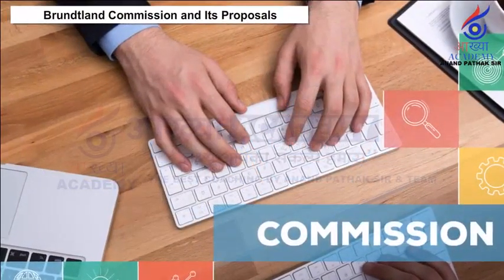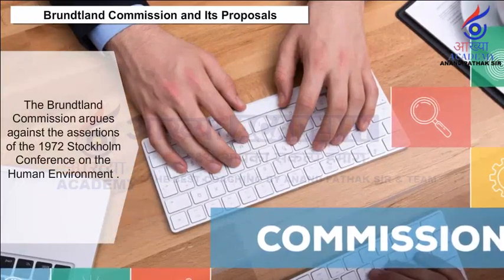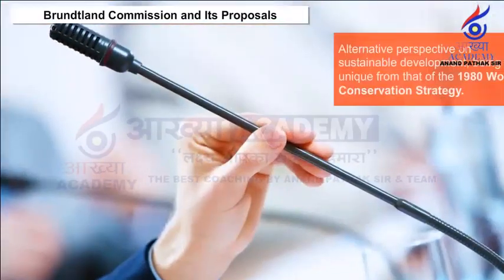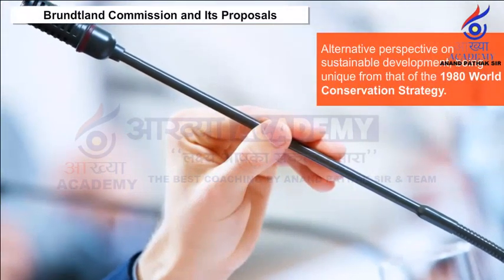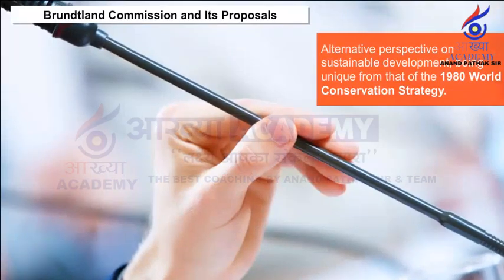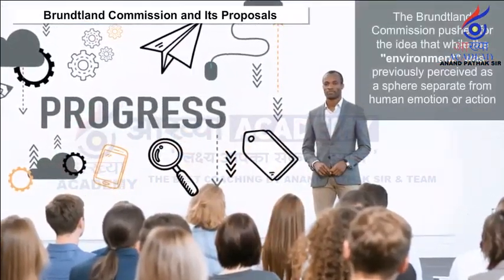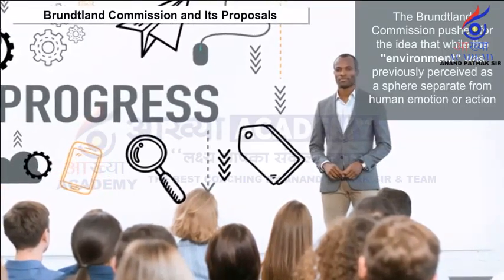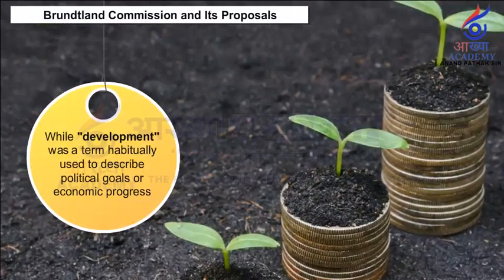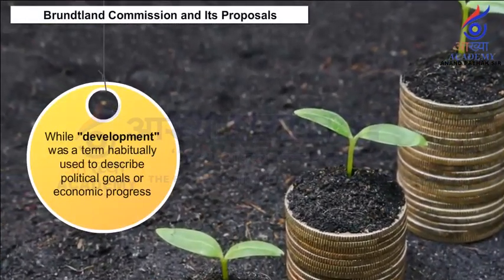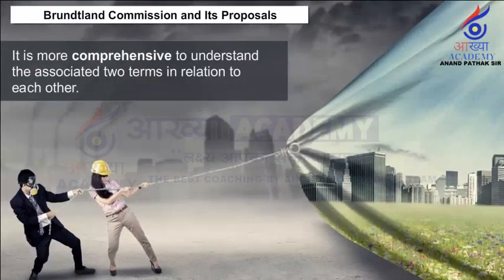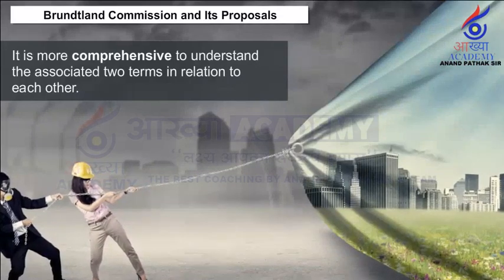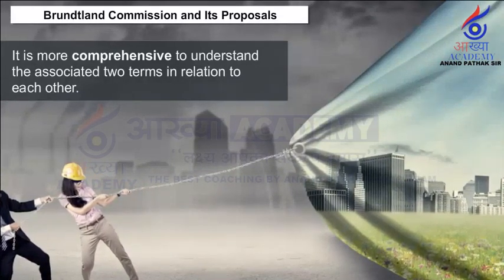Brundtland Commission and its Proposals. The Brundtland Commission argues against the assertions of the 1972 Stockholm Conference on the Human Environment and provides an alternative perspective on sustainable development, distinct from that of the 1980 World Conservation Strategy. The Commission pushed for the idea that while the environment was previously perceived as separate from human action, and development was used to describe political or economic progress, it is more comprehensive to understand both terms in relation to each other — they cannot and should not be distinguished as separate entities.